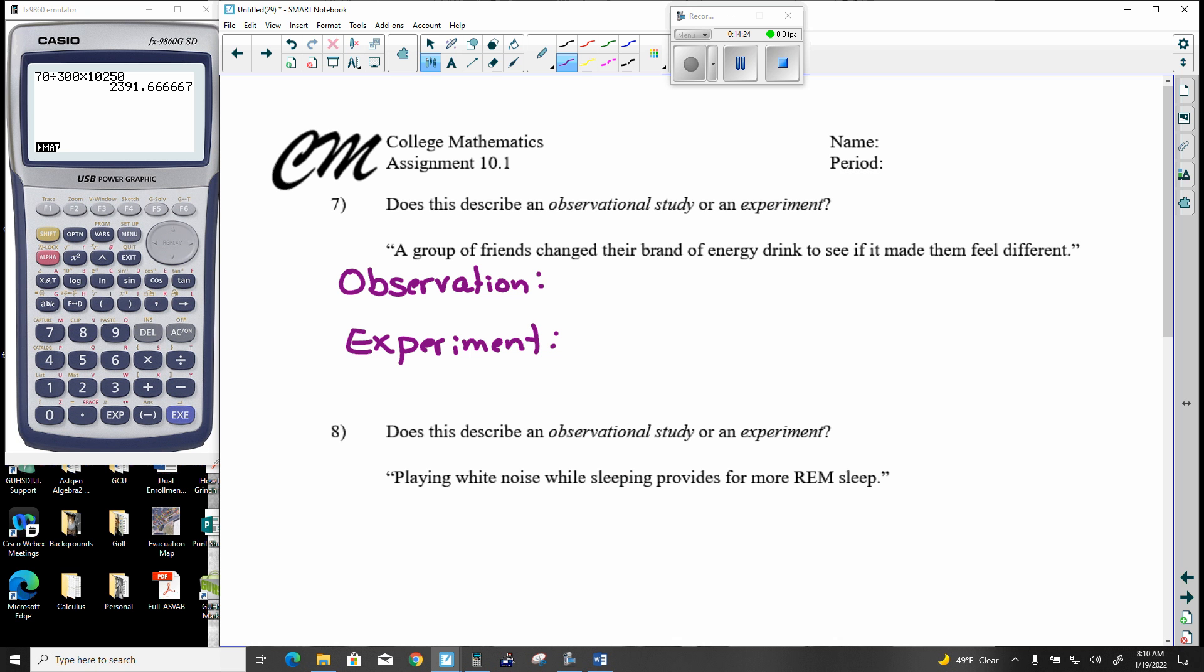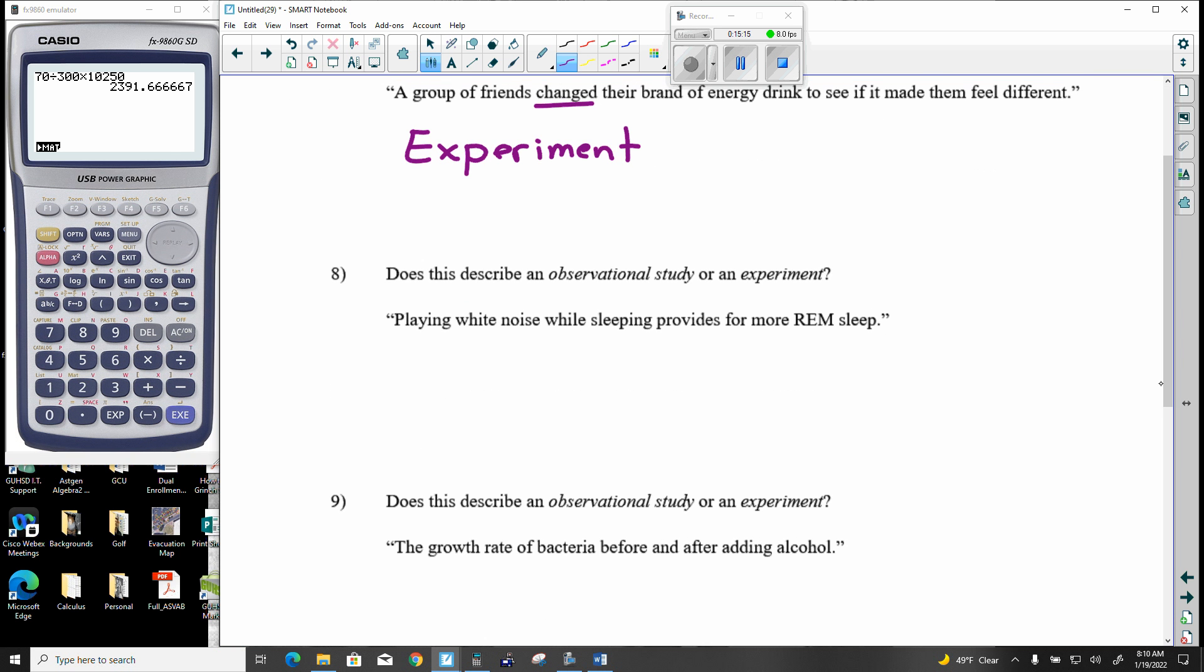You could be introducing a drug to a body. You could be introducing music to a classroom. You could be manipulating the environment to see what's the difference between this and that. Where an observation is, again, you just sit on the side and you just observe what's happening. A group of friends change their brand of energy drink to see if it made them feel different. So they changed it on purpose. This is an experiment. They changed their brand of energy drink on purpose. It just wouldn't have worked out that way.